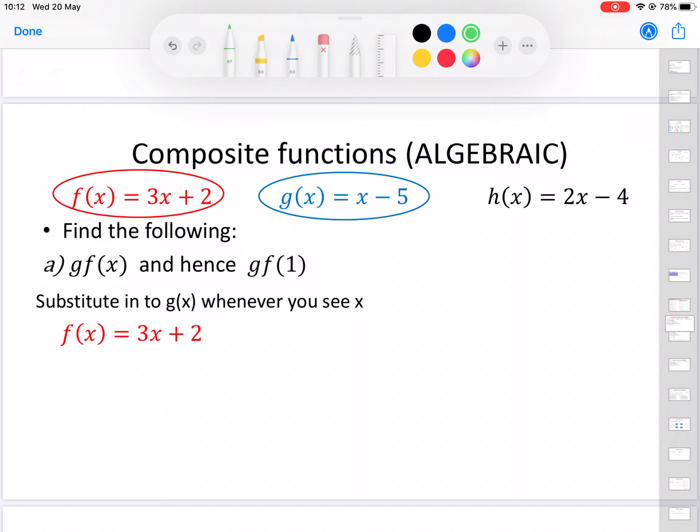Find the following: gf(x) and hence find gf(1). We've got two steps to this. So gf(x), just like before in previous composite functions, we have to start with f(x). So f(x) is 3x + 2. That's fine.